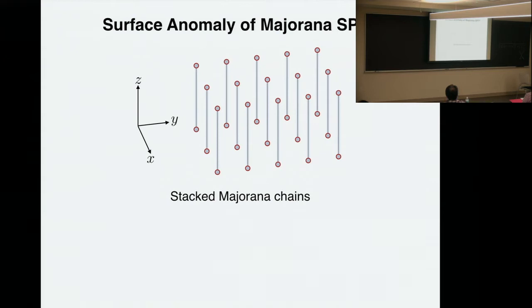An open question: what kind of surface constraints do you get if you think about a three-dimensional array of Kitaev chains, where on the surface you get a lattice of Majorana modes? That would be interesting, but I don't have the answer yet.